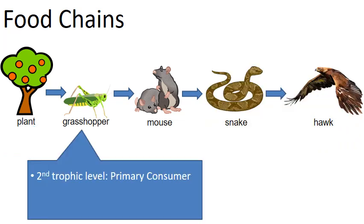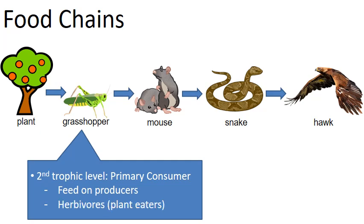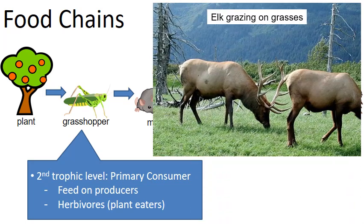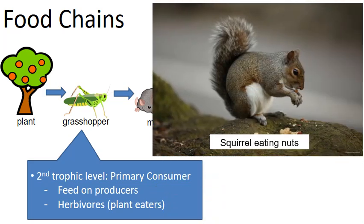At the second trophic level, we have the primary consumer — trophic level two, but consumer number one. These consumers feed upon the level below, which are the plants and producers. They are typically called herbivores. Examples include a mouse eating seeds, elk grazing on grasses, and a squirrel feeding upon nuts from a tree — all good examples of primary consumers or herbivores.